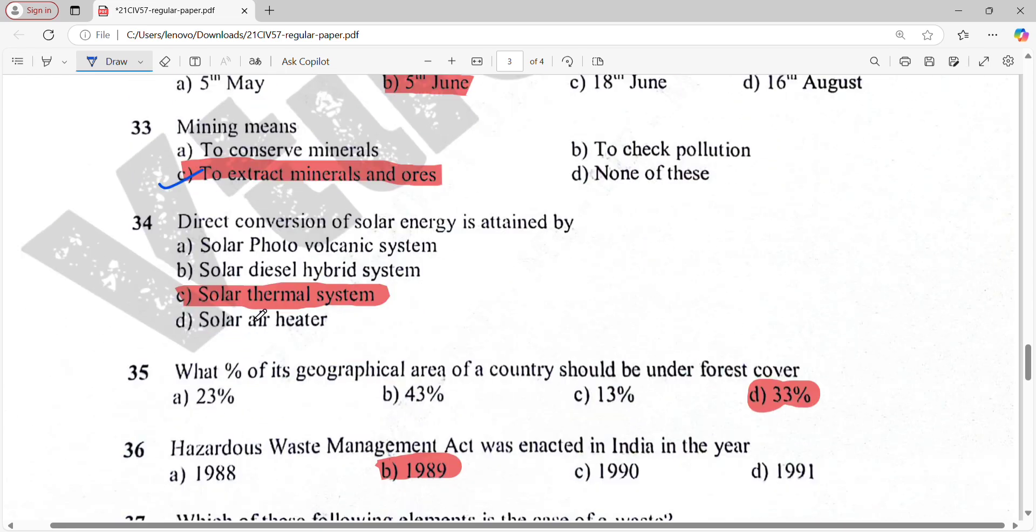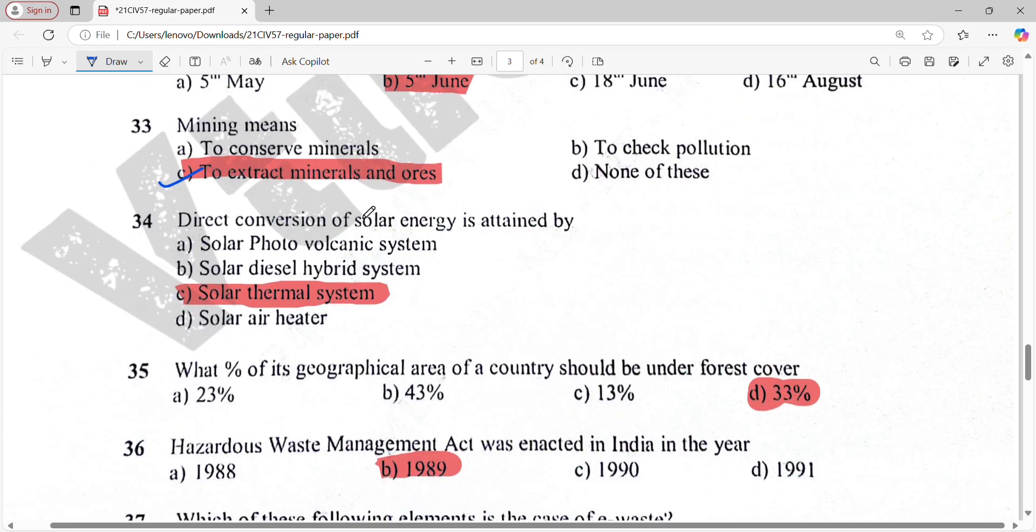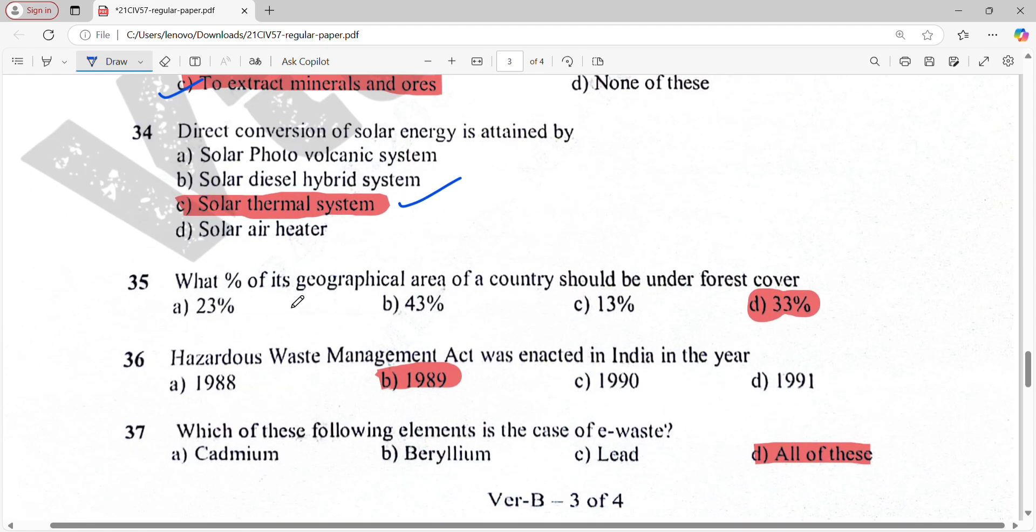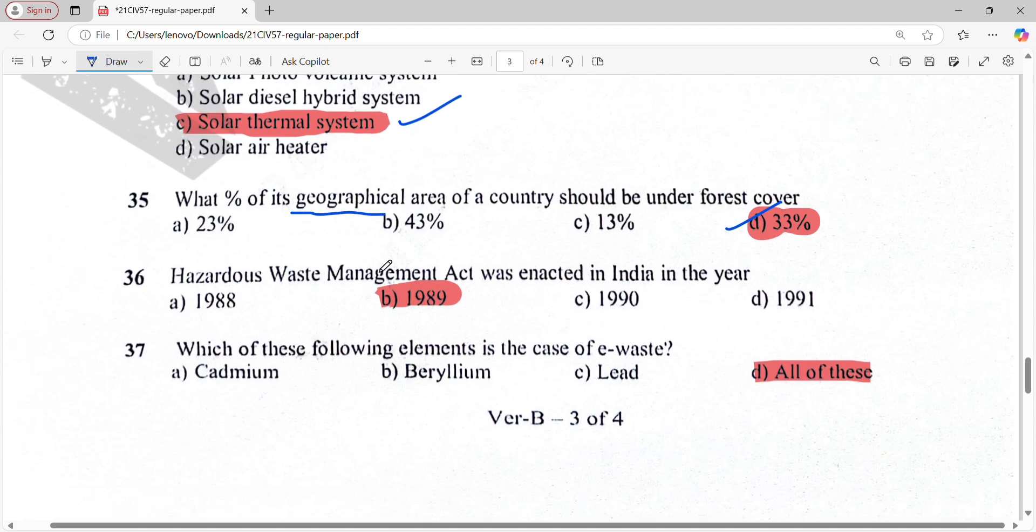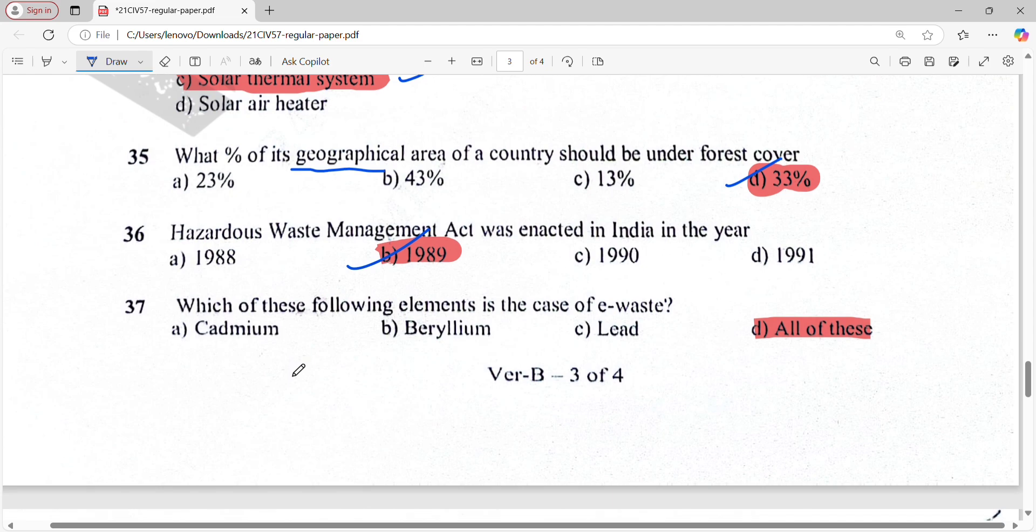Mining means to extract minerals and ores. Direct conversion of solar energy is attained by solar thermal system. What percentage of geographical area of the country should be under forest cover? That is 33%. Hazardous Waste Management Act was enacted in India in the year 1989. Which of these following elements is the case of e-waste? That is all of these: cadmium, beryllium, and lead.